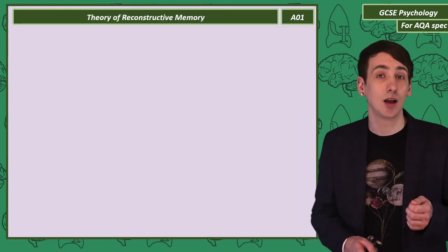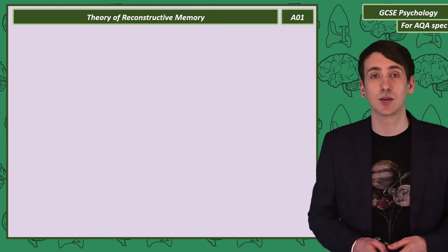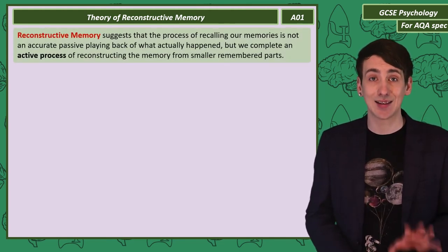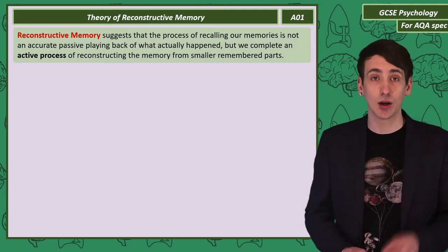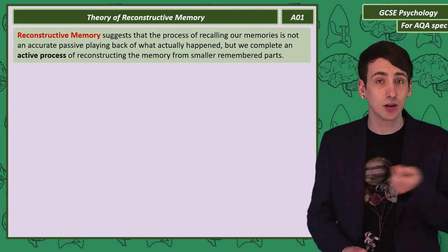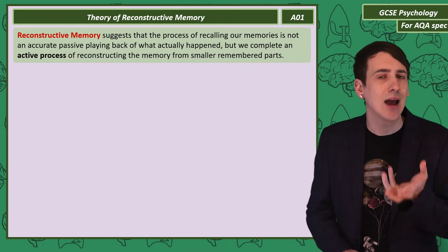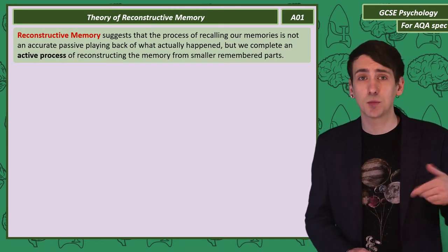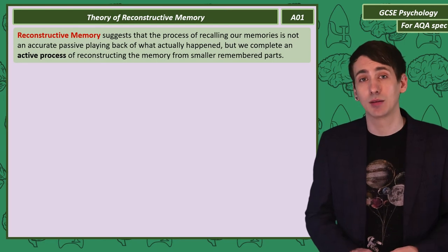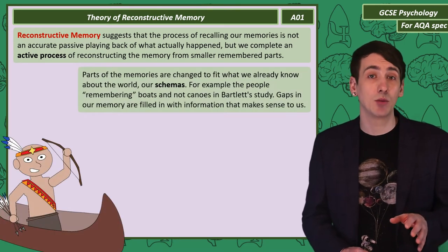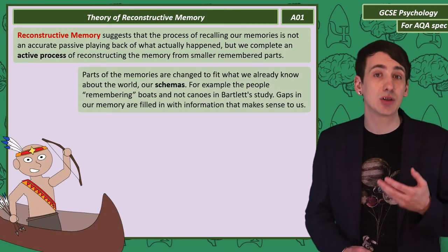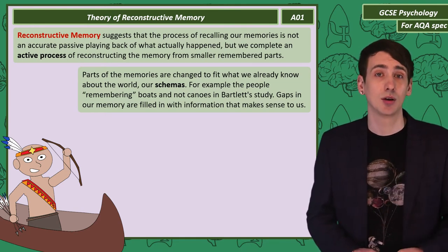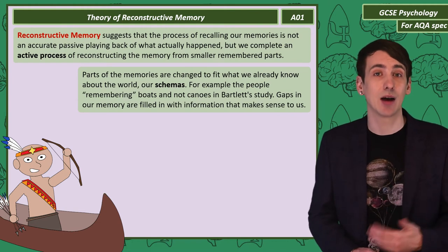Now we've talked through Bartlett's study, let's look in a little more detail at his theory. Starting with the term reconstructive memory — we would say it's an active process. We bring small remembered parts together and create a memory that isn't accurate. A normal view of memory would be passive, where we just play back the memory in our mind. Not only do we make memories from small parts, but we change parts of memories and fill in gaps so the memory makes sense to us. This is based on the schemas that we have.